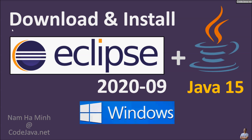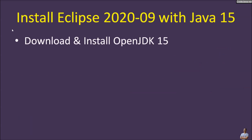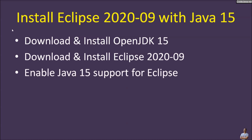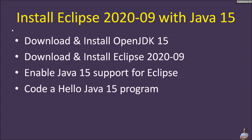In this video, I'm very glad to have you get started with Java development on Windows by downloading and installing Java Development Kit JDK version 15 and Eclipse IDE version 2020-09 — the latest versions as of October 2020. I will show you how to download and install OpenJDK 15 and Eclipse 2020-09, how to enable Java 15 support for Eclipse IDE, and how to code the Hello World Java program for Java 15.